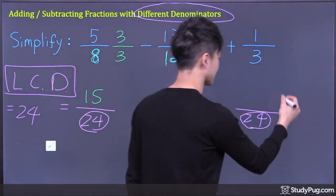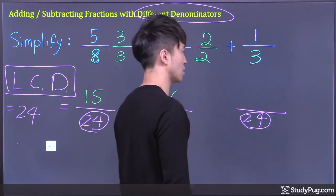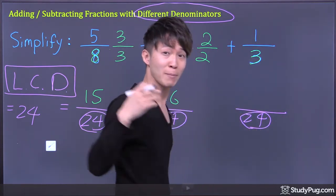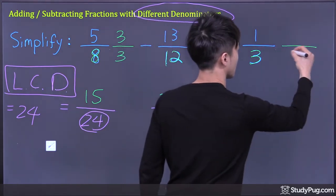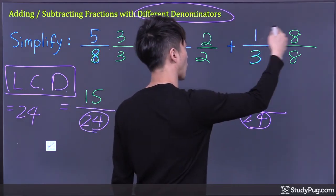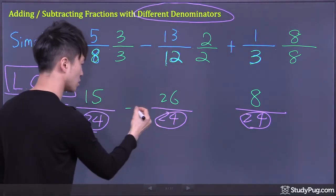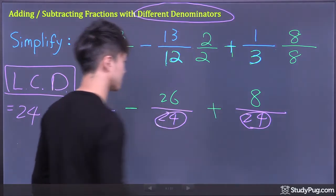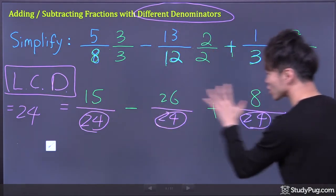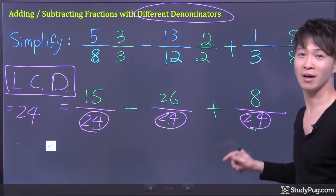For the last fraction, the original denominator is 3. We have to convert the denominator to 24. So from 3 to 24, we must multiply by 8. The top, to be fair, multiply by the same number, 8. So now the numerator is 1 times 8, which is 8. And don't forget about the sign — here we have subtraction and here we have addition. Now we have three fractions all with the common denominator of 24.